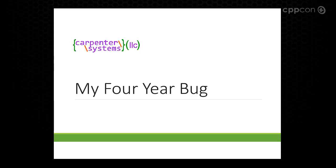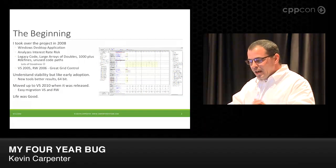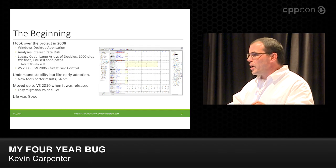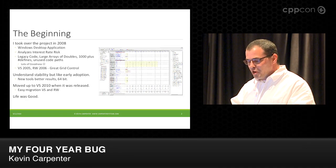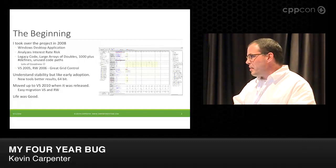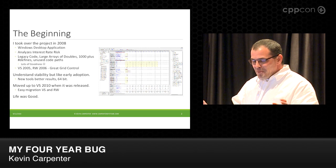Good morning. So I hope we can all have a bit of a laugh as I tell you about a bug I experienced over the last four years. To give you some background, I took over this project in 2008. It's an MFC-based Windows desktop app used to analyze interest rate risk, specific to credit unions. It's got a lot of legacy code — arrays of doubles in the length of 200,000 to 300,000, keeping 20 or 30 of these in memory at once. Over 1,000 defines for unused code paths. My favorite is a method that is actually over 19,000 lines long — in a single method.